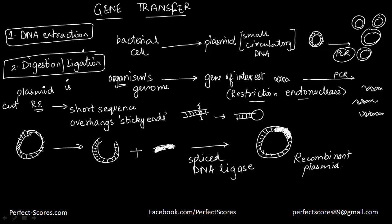To summarize: the first step is extracting the DNA — taking the plasmid from a bacterial cell and taking the gene of interest from the organism's genome, then amplifying both using PCR with the enzyme restriction endonuclease. The second step is digestion and ligation, where the plasmid is cut using restriction endonuclease producing sticky ends, and the cut plasmid is spliced together with the gene of interest using DNA ligase to give the recombinant plasmid.